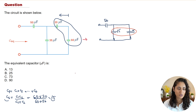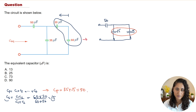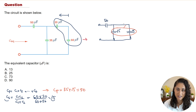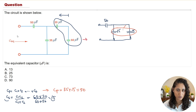Since 35 and 15 are in parallel, we use the addition equation: 35 + 15 = 50 µF. Now we can redraw the circuit again and replace those two with a single 50 µF capacitor.